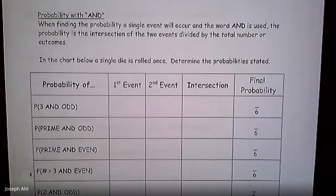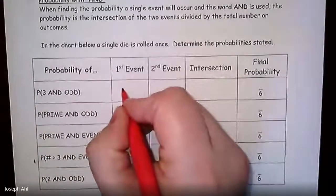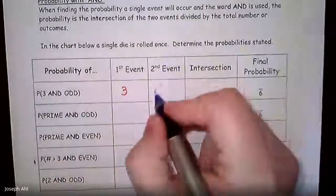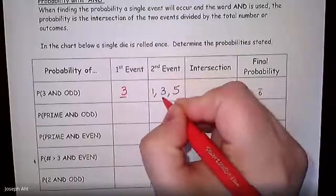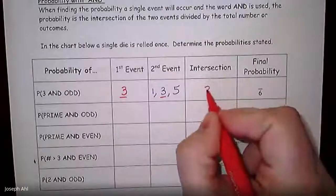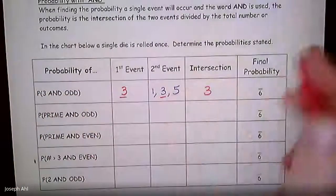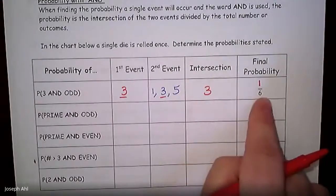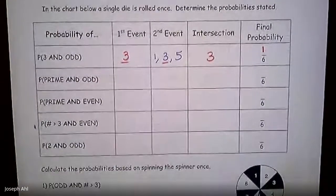If we roll a single die once and want the probability of getting a three AND an odd number: the first event is getting a three, so we list just the number 3. The second event is getting an odd number, so the odd numbers on a die are 1, 3, and 5. The intersection — the overlap between these two groups — is the number 3. So the final probability is 1 out of 6, since only the number 3 meets both criteria at the same time.